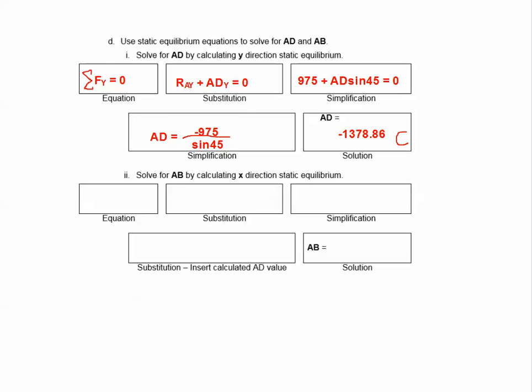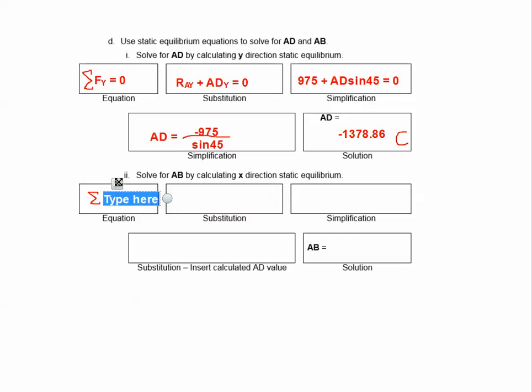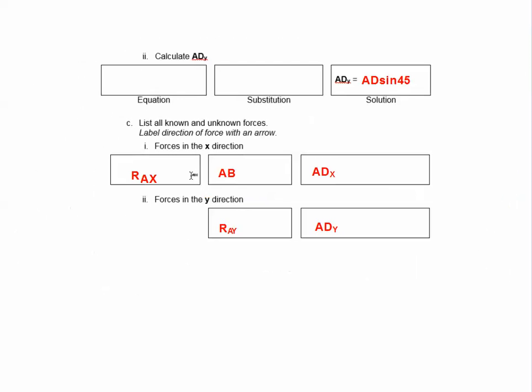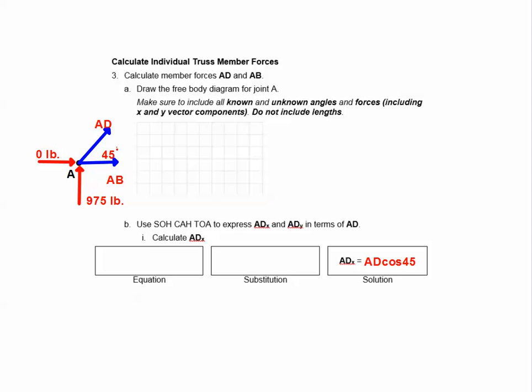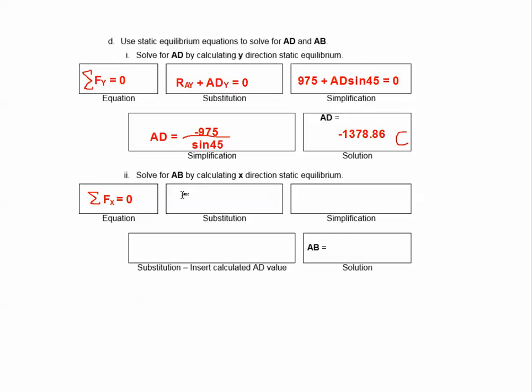For now we're going to define AB by using the X-static equilibrium. That is the same deal. Sigma FX equals zero. What are the forces in the X direction? If I go back and look at my FBD for joint A, the X component of this force... AB is all X, and it's the X component of AD. Those are the two forces that actually matter in this calculation. So we'll go ahead and throw ADX plus AB equals zero.